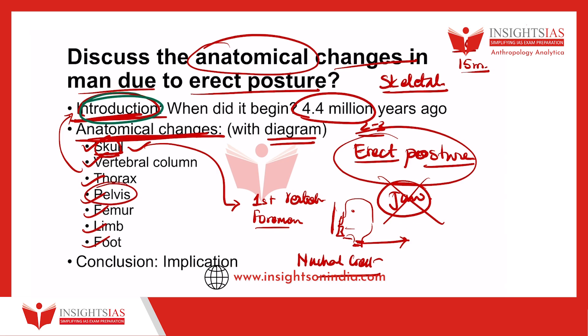Another very important change that happened in man as a result of erect posture is in the femur. The femur bone shows the linea aspera, which is very important. The linea aspera helps the gluteus muscles and other extensor muscles that support the erect posture. This is a very important and significant development. The cross-section of the femur is also more prismatic.